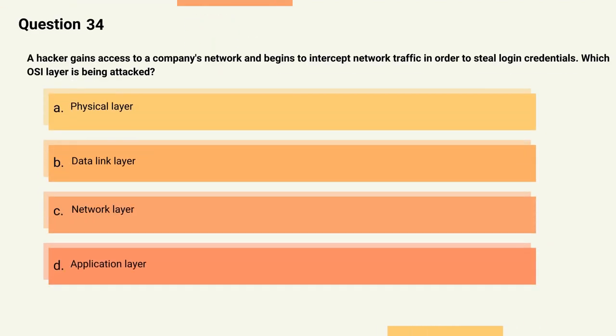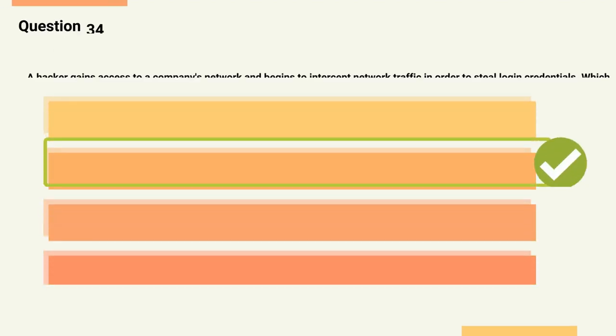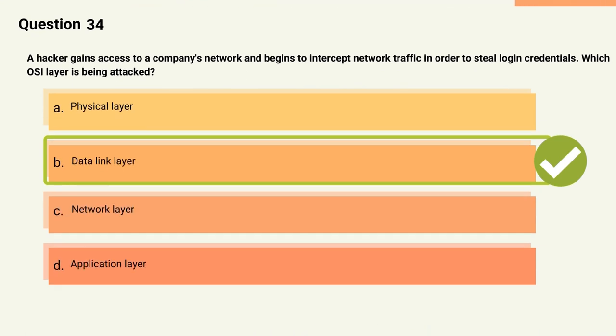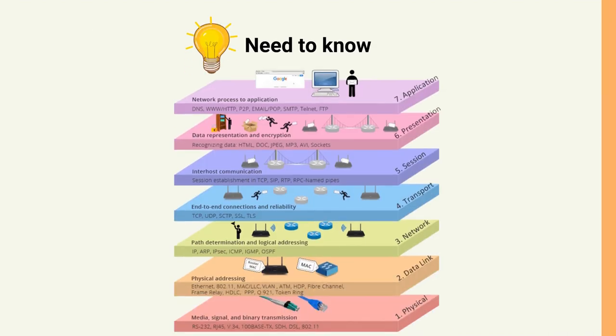Question 34: A hacker gains access to a company's network and begins to intercept network traffic in order to steal login credentials. Which OSI layer is being attacked? Options: A) Physical layer, B) Data link layer, C) Network layer, D) Application layer. The correct answer is Option B, Data link layer. Explanation: The data link layer is responsible for the logical transmission of data between network nodes and error detection. Intercepting network traffic to steal login credentials is an attack on this layer.